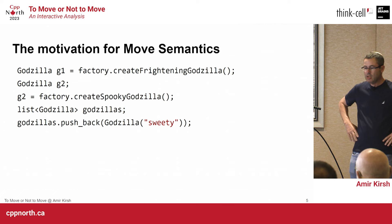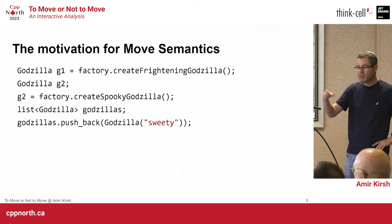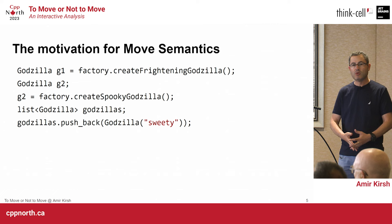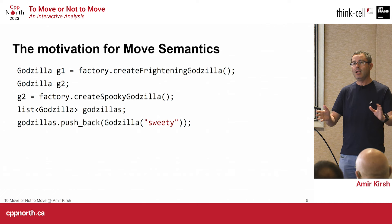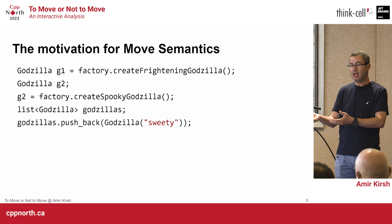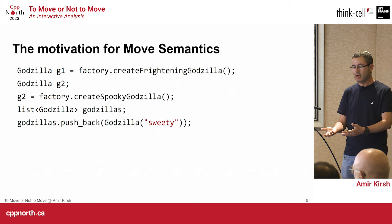Why do we need Move and what is it all about? Let's consider two Godzillas. I use Godzilla as something expensive to copy. We have Godzilla G1 created inside a factory called CreateFrighteningGodzilla, which returns a Godzilla by value. Before C++11, we'd just copy the Godzilla. That copy is redundant because the Godzilla created inside the factory is temporary — it was created only for us, so we want to move it.